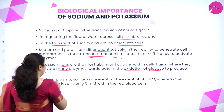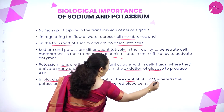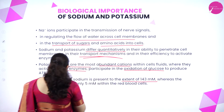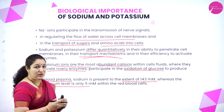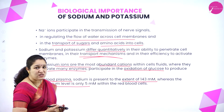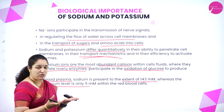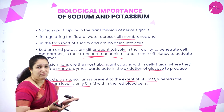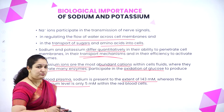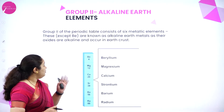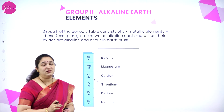Potassium participates in oxidation of glucose to produce ATP, which is called the currency of the cells. In blood plasma, sodium is present at 143 millimoles and potassium is present at only 5 millimoles. So in blood plasma, sodium level is higher and potassium level is lower. These two ions must be balanced well in our body for normal functioning.